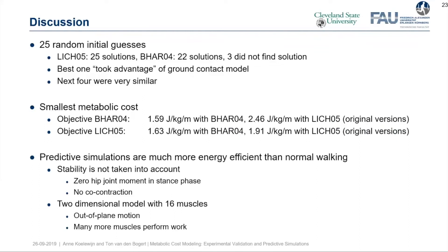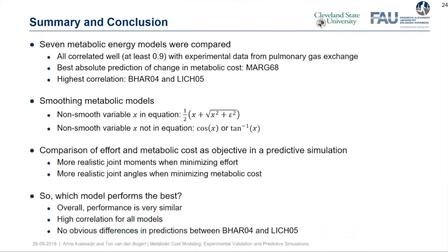To wrap up: we compared seven metabolic energy models against oxygen consumption data and found that all correlated well, with a correlation coefficient of at least 0.9 with experimental data. The best absolute prediction of a change in metabolic cost was found by the model of Margaria, but the highest correlation was with Bhargava et al. and Lichtvark and Wilson. We smoothed the metabolic cost using two equations depending on whether the non-smooth variable was in the equation or not. When comparing effort and metabolic cost minimization in predictive simulation, we found more realistic joint moments when minimizing effort and more realistic joint angles when minimizing metabolic cost. Overall, the performance was very similar between all models, and there were no obvious differences between Bhargava et al. and Lichtvark and Wilson.